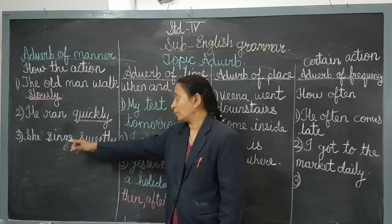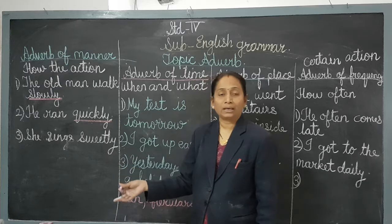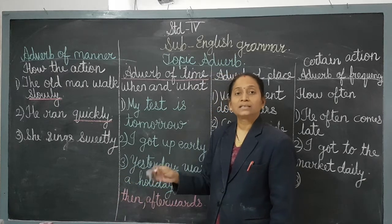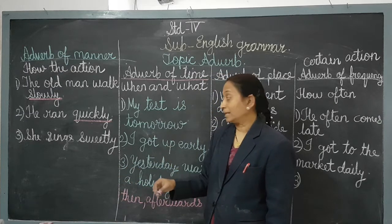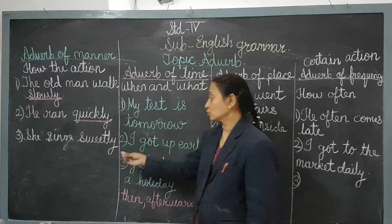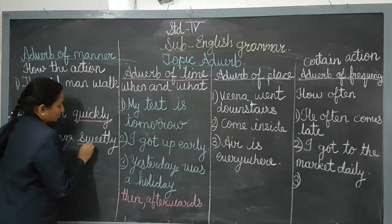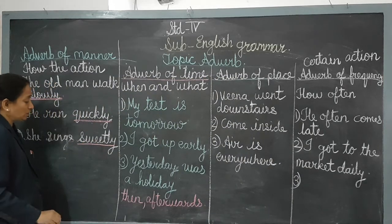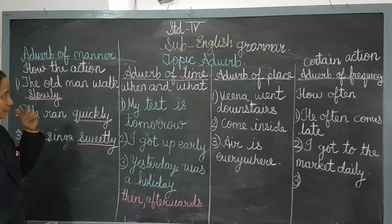Now see the next one: 'She sings sweetly.' How does she sing? She sings sweetly. That 'sweetly' tells us in what manner she is singing. So 'sweetly' is also the adverb in this sentence, and it is an adverb of manner.